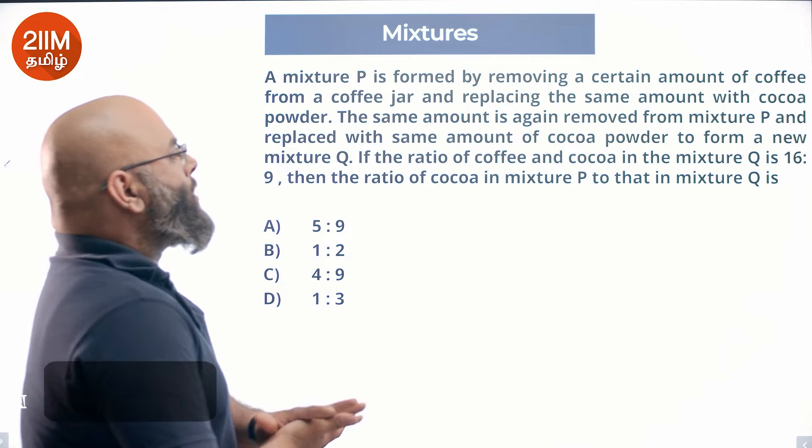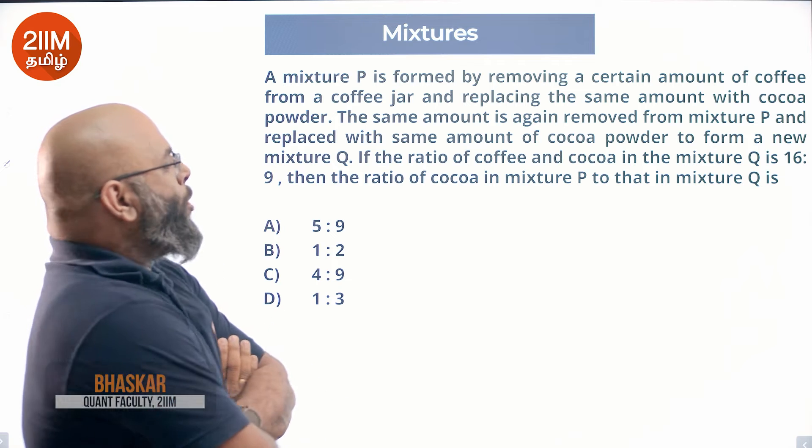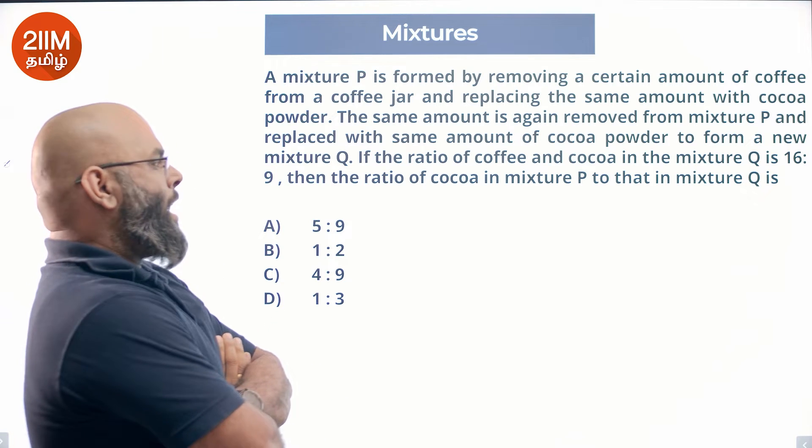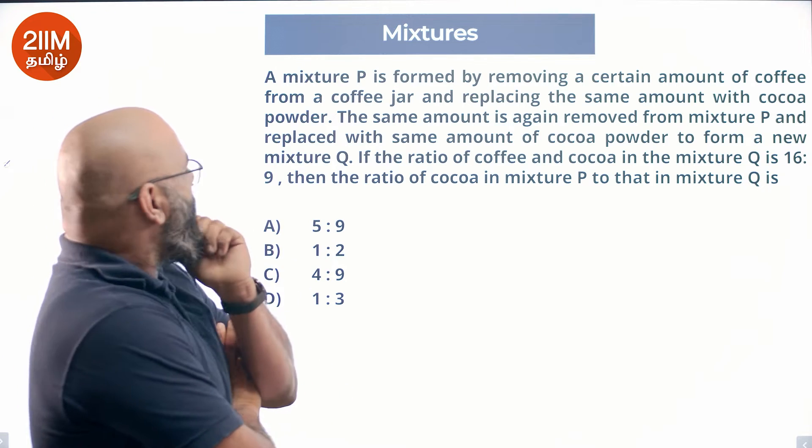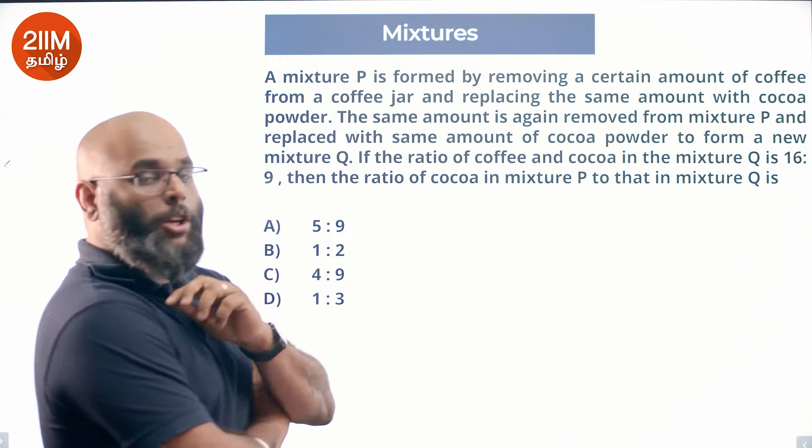A mixture P is formed by removing certain amount of coffee from a coffee jar and replacing the same amount with cocoa powder. The same amount is again removed from mixture P and replaced with the same amount of cocoa powder to form a new mixture Q.